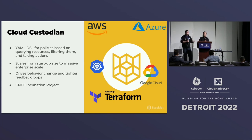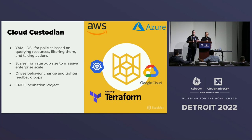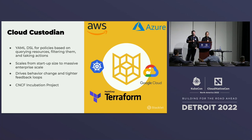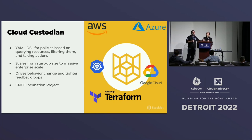What Cloud Custodian allows you to do is do all of this in one place. You can set up policies with an easy-to-use YAML-based engine and control your Terraform, your Kubernetes clusters, any of the public clouds — Azure, AWS, GCP — and it's all the same YAML. You can run the same policy engine, which means you're going to be getting the same reporting.